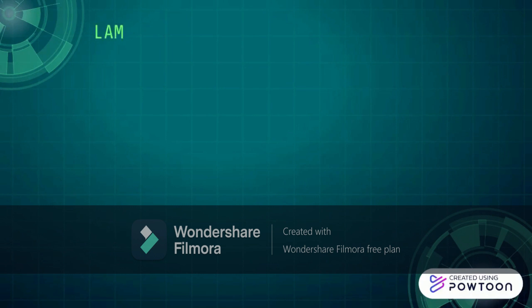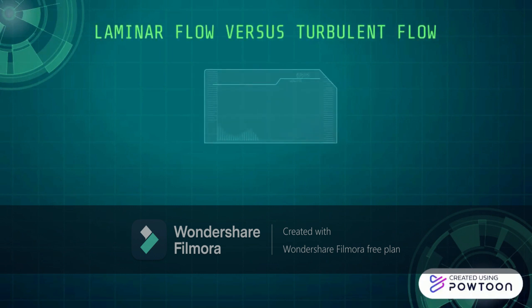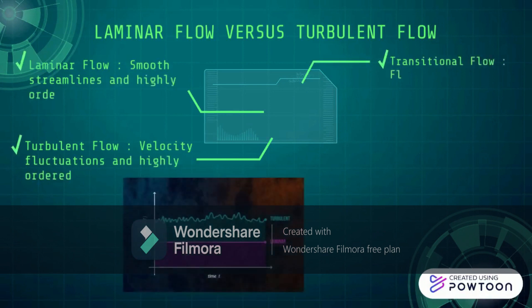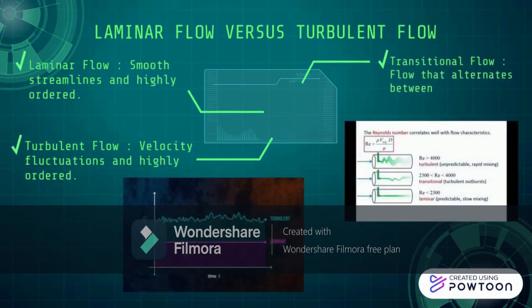Laminar versus turbulent flow. Laminar flow, or streamlined flow, in pipes or tubes occurs when a fluid flows in parallel layers with no disruption between the layers. At low velocities, the fluid tends to flow without lateral mixing, and adjacent layers slide past one another like playing cards. There are no cross-currents in laminar flow. The motion of the fluid particles is very orderly, with all particles moving in straight lines parallel to the pipe walls. Any lateral mixing occurs by the action of diffusion between layers of the liquid.